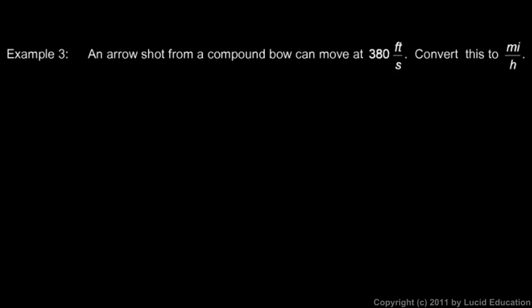Sometimes you have to multiply by one more than once in order to get your answer with the desired unit. So here's an example that illustrates that. An arrow shot from a compound bow can move at 380 feet per second, and that's true. That's about how fast they go from a high-end compound bow.